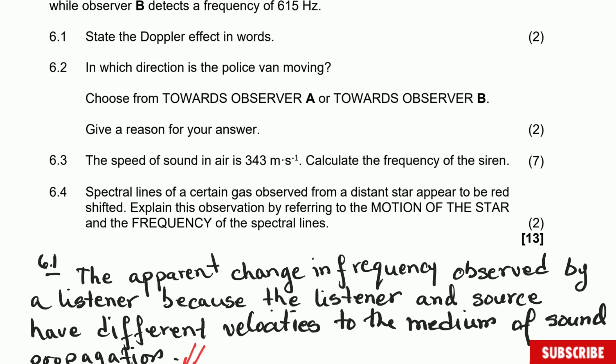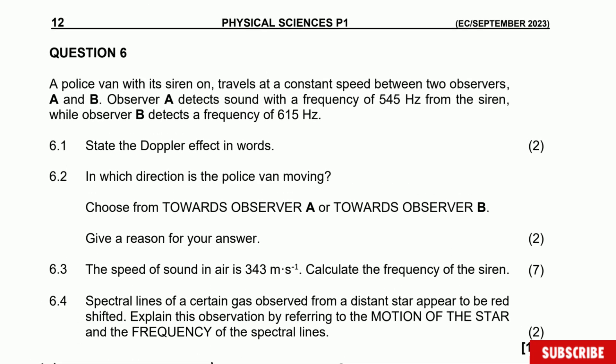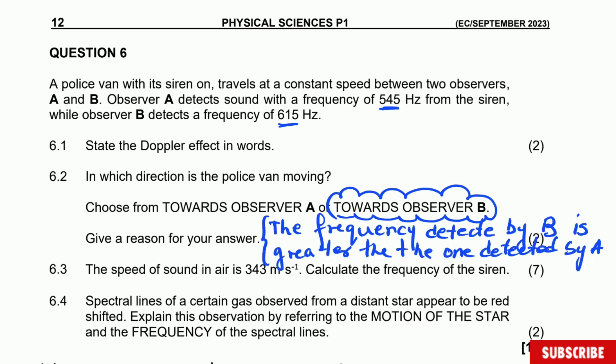Question 6.2: In which direction is the police van moving? Choose from towards observer A or towards observer B, and give a reason for your answer. Observer B detects a greater frequency than observer A, which means the van is moving away from observer A towards observer B. The answer is towards observer B, because the frequency detected by observer B is higher than the frequency detected by observer A.